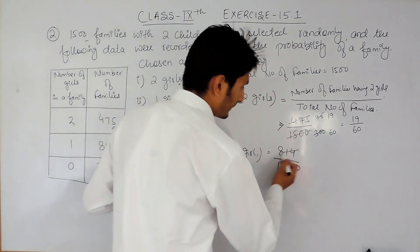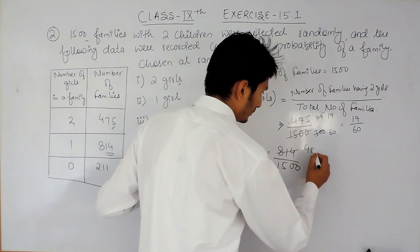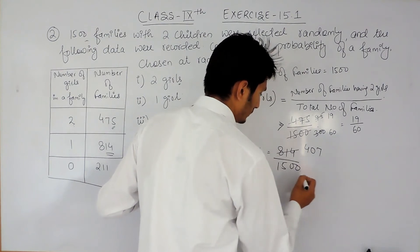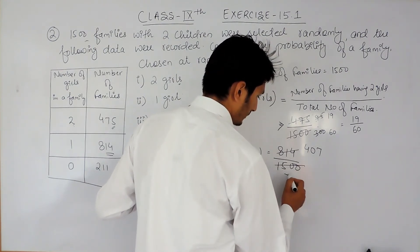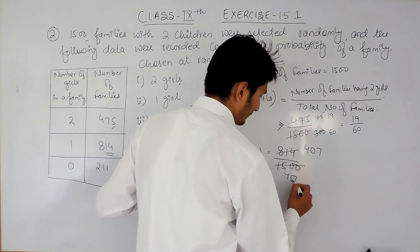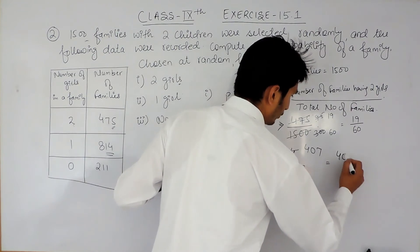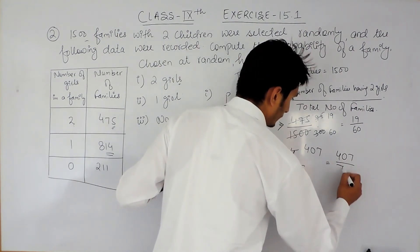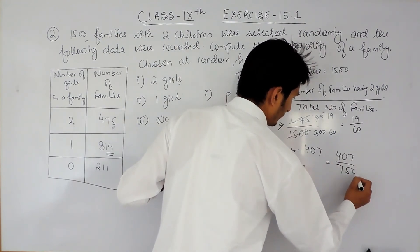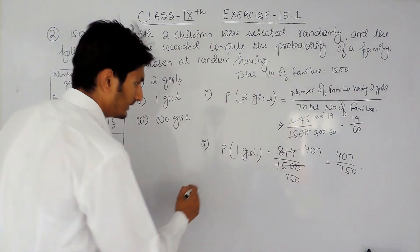We can cancel by 2, giving 407 over 750. So the answer for the second part is 407 upon 750.